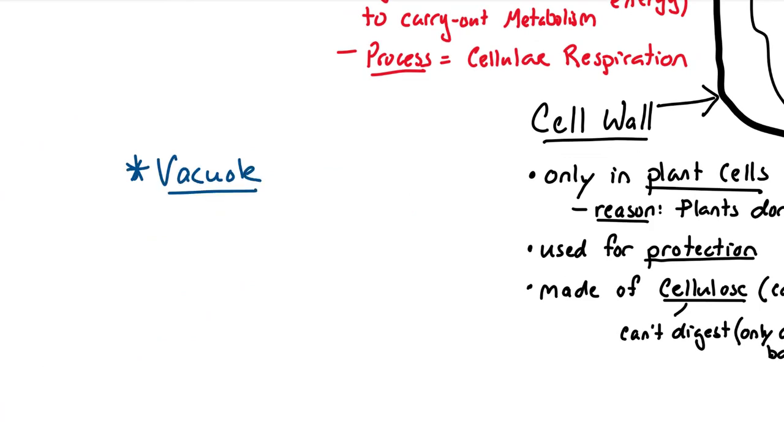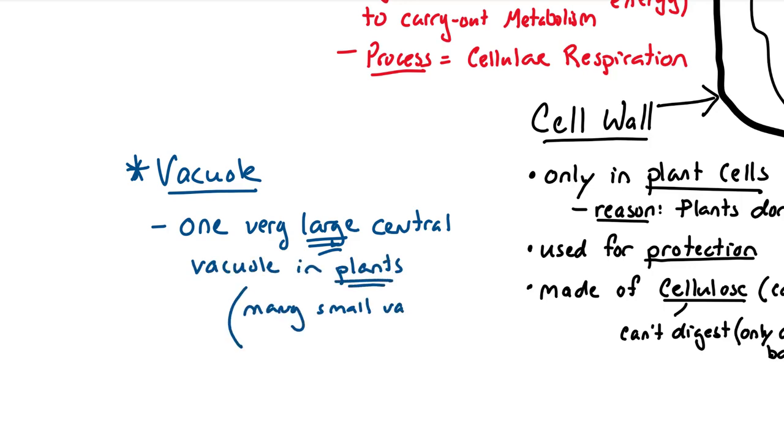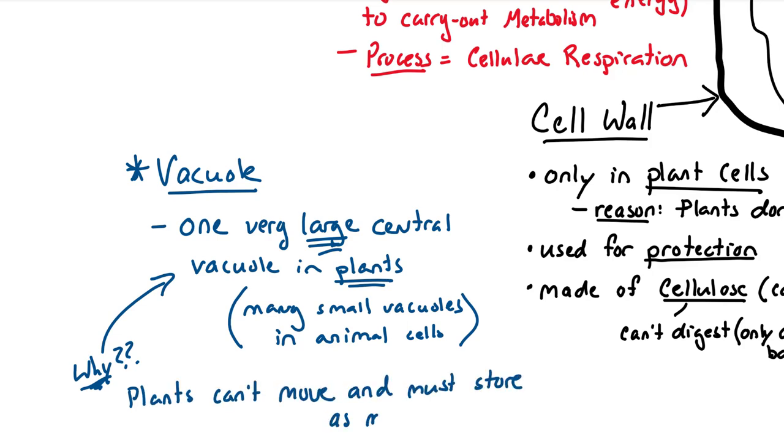It must be noted that a vacuole, in plants, they have one very large central vacuole. That's different than animal cells that have many small vacuoles. The reason plants have one large central one is because they can't move. It all goes back to they can't move. So they must store as much material as possible.